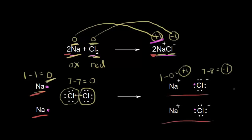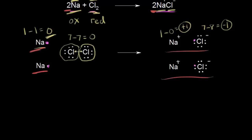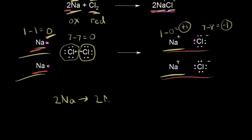Now that we've figured out what's happening with the electrons in magenta, let's write some half reactions and identify the oxidizing and reducing agents. We have two sodium atoms turning into two sodium ions, and each sodium atom lost one electron, so two electrons total are lost — shown in magenta. This is the oxidation half reaction because electrons are being lost. LEO the lion: loss of electrons is oxidation.